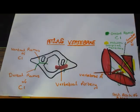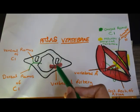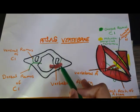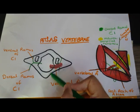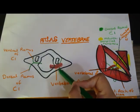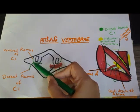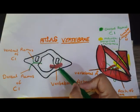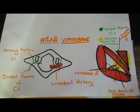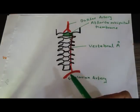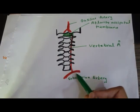One by one we are going to discuss the vertebral artery, suboccipital plexus of veins, and dorsal ramus of C1. First, let us discuss the vertebral artery. As you can see in the diagram, the vertebral artery is separated from the posterior arch of the atlas vertebrae by the dorsal ramus of C1. C1 divides into ventral ramus and dorsal ramus, and the dorsal ramus of C1 separates the vertebral artery from the posterior arch of the atlas vertebrae.